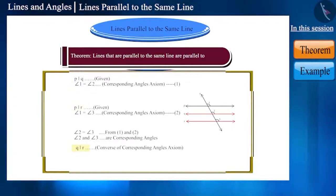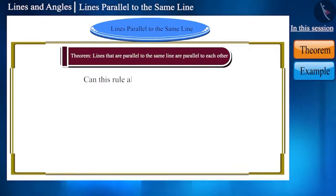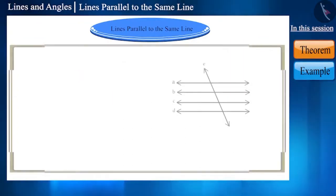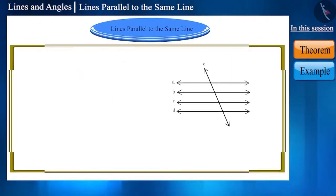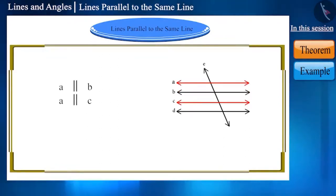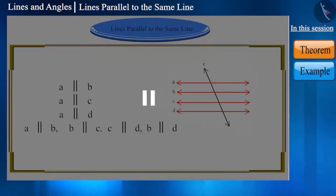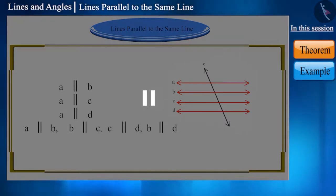This rule can also be applied to more than two lines. If lines are given such that line A is parallel to line B, line A is parallel to line C, and line A is also parallel to line D, then all these lines will be parallel to each other. You can pause the video and try to prove it.